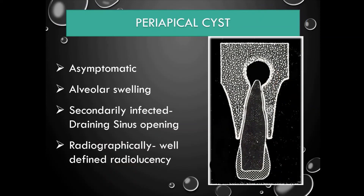As the granuloma increases in size, the central cells become devoid of nutrients, undergo degeneration, and form a cyst. The cyst is asymptomatic and may enlarge to cause alveolar swelling. If secondarily infected, there may be a draining sinus opening. Radiographically, you can see a well-defined radiolucency usually surrounded by a sclerotic border.